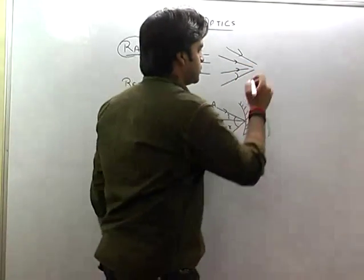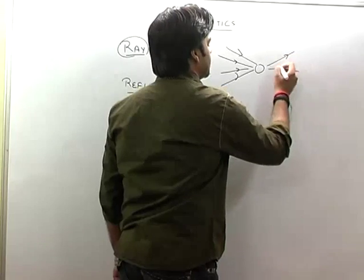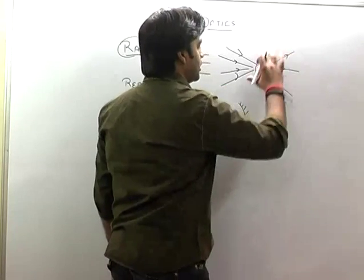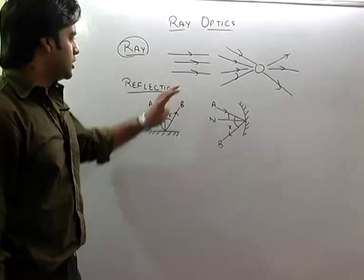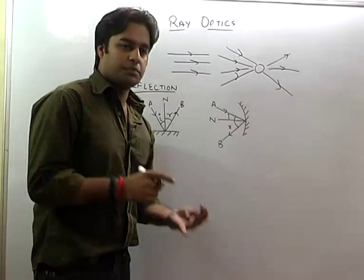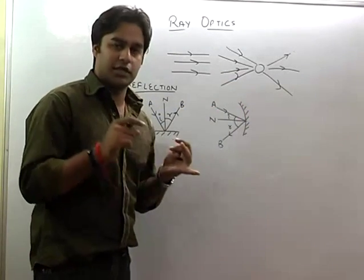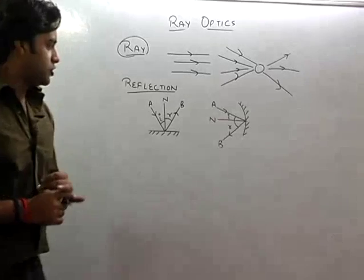One type is divergent. These are called divergent beams. So there are three types of beams of light: parallel beam, convergent beam, and divergent beam.